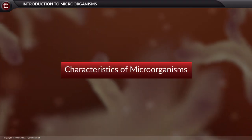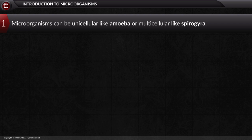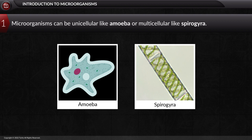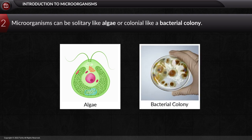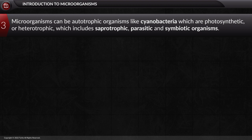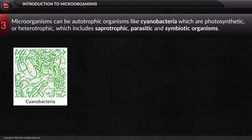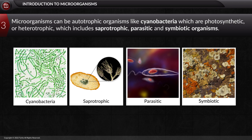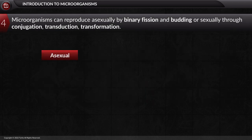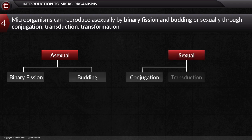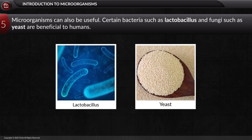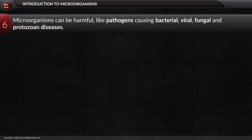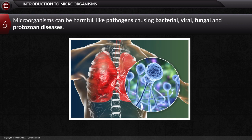Considering the characteristics of microorganisms: they can be unicellular like amoeba or multicellular like Spirogyra. They can be autotrophic like cyanobacteria, which are photosynthetic, or heterotrophic, which includes saprotrophic, parasitic, and symbiotic organisms. Microorganisms can reproduce asexually by binary fission and budding, or sexually through conjugation, transduction, and transformation. Certain bacteria such as Lactobacillus and fungi such as yeast are beneficial to humans, while harmful microorganisms called pathogens cause bacterial, viral, fungal, and protozoan diseases.